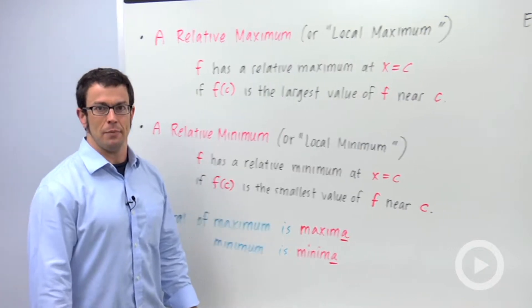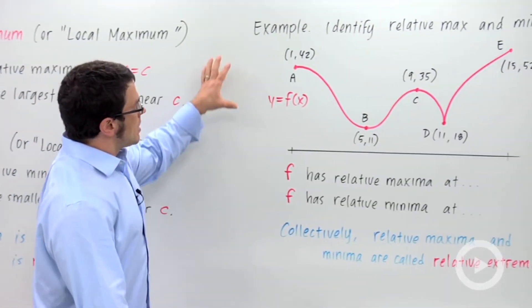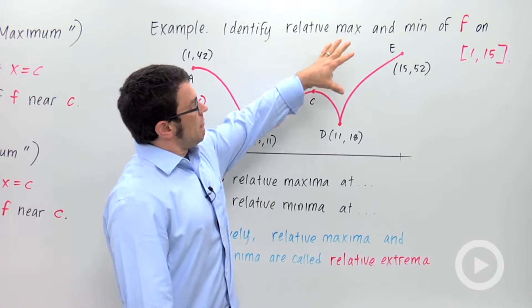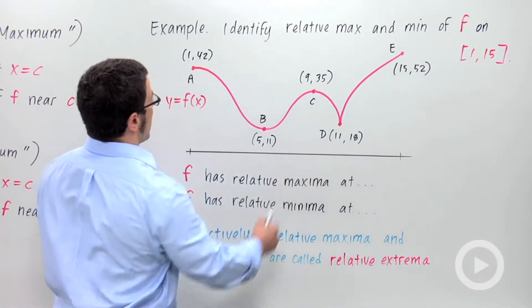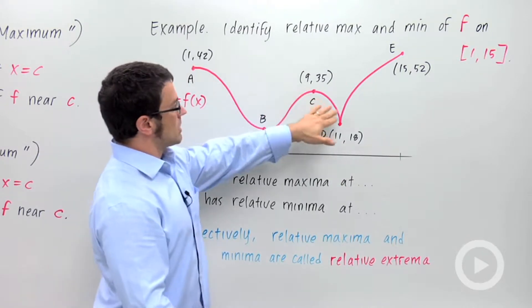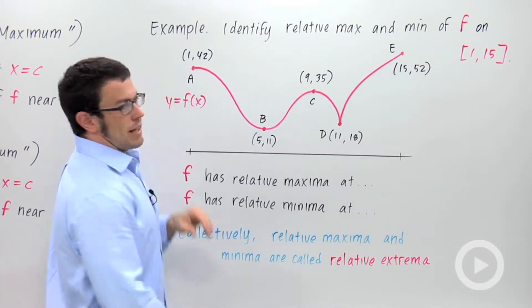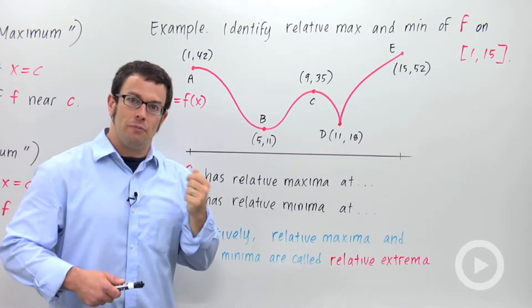Let's take a look at an example. The problem says, identify the relative max and min of f on the interval from 1 to 15. Now that's the part I've got graphed here. So this is my graph of y equals f of x. And I want to identify where the relative maxima and relative minima occur.